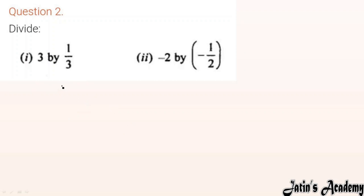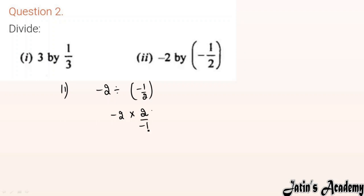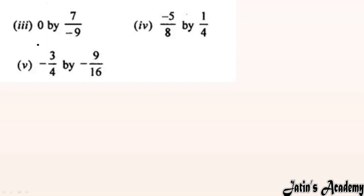Now we are having the second part. We are given minus 2 ÷ (minus 1/2). Divide converts to multiply, next term takes reciprocal: 2/minus 1. Minus and minus cancel, so answer is 4.